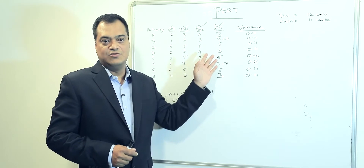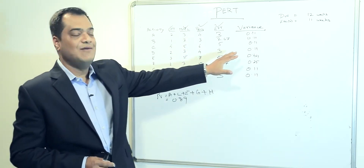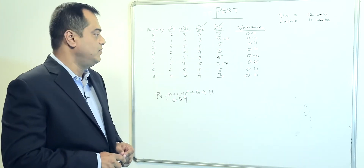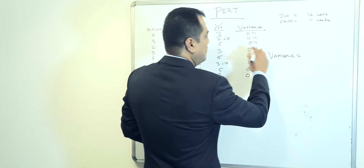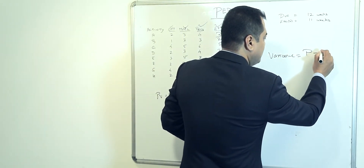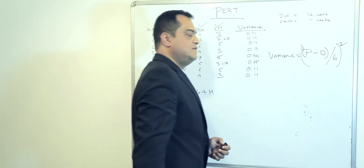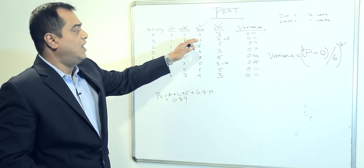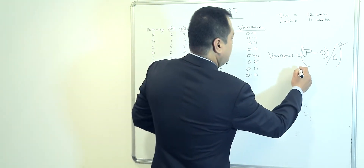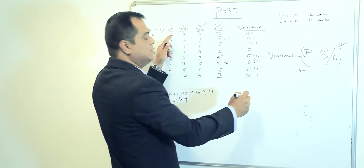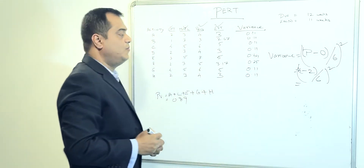To create variance, the formula is: pessimistic minus optimistic, divided by six, squared. So in this case, pessimistic of four minus optimistic of two, divided by six, squared — that comes up with a variance of 0.11.